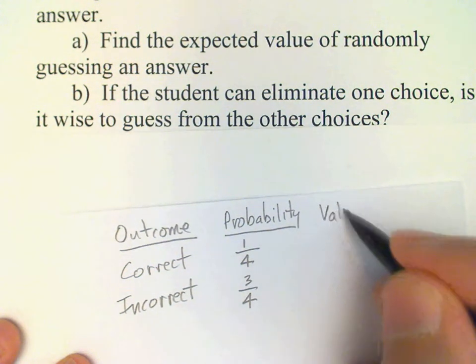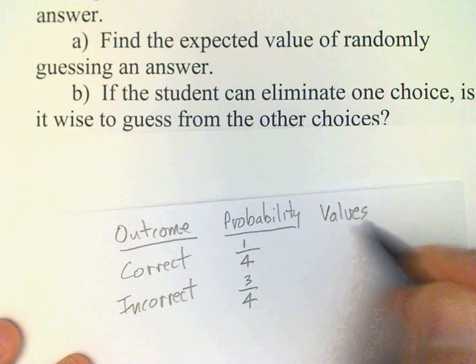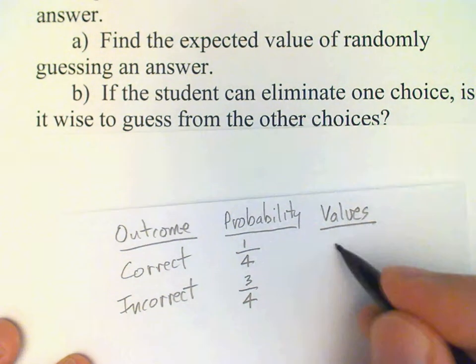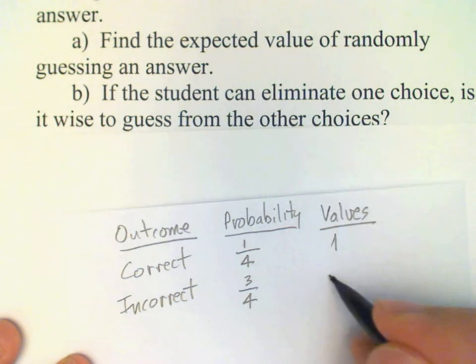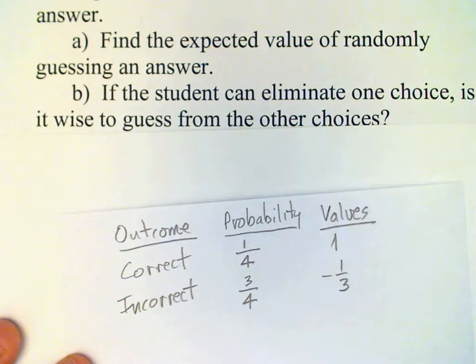The values are still the same, namely one for a correct answer and negative one-third for the incorrect answer.